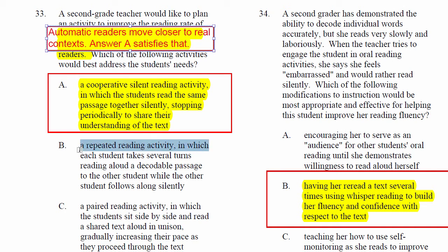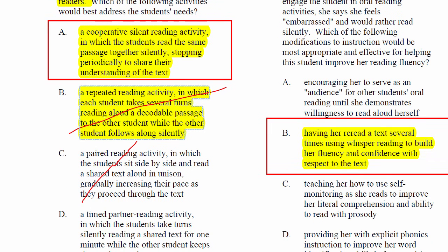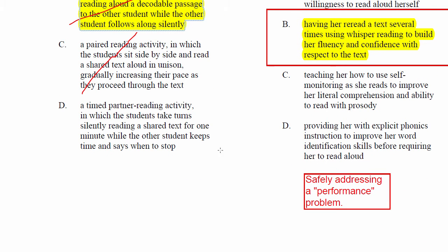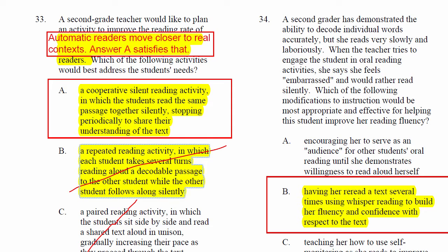Answer B — a repeated reading activity in which each student takes turns reading aloud a decodable passage while the other silently follows along — was probably used to give a good foundation of fluency, but now we want to move into a real context, so B is out. Answer C — a paired reading activity where students read a shared text aloud in unison, gradually increasing their pace — is probably something they did to become automatic decoders, but it's not getting them closer to real context. Answer D — a timed partner reading activity where students take turns reading silently for one minute while the other keeps time — is more of a game, not getting us toward real context. We don't read with stopwatches typically.